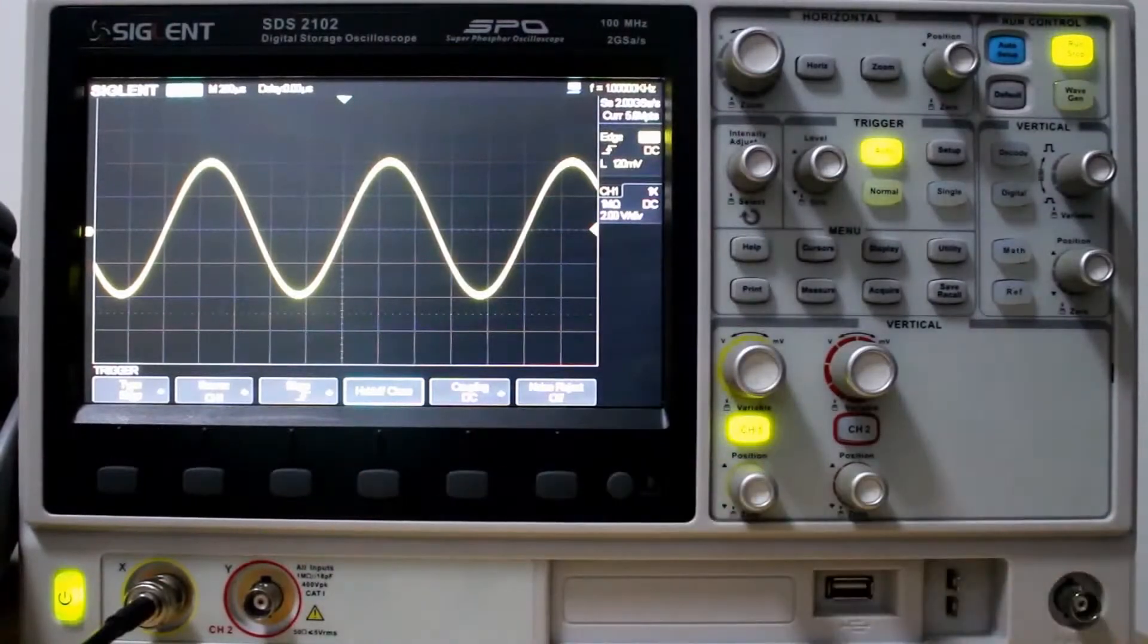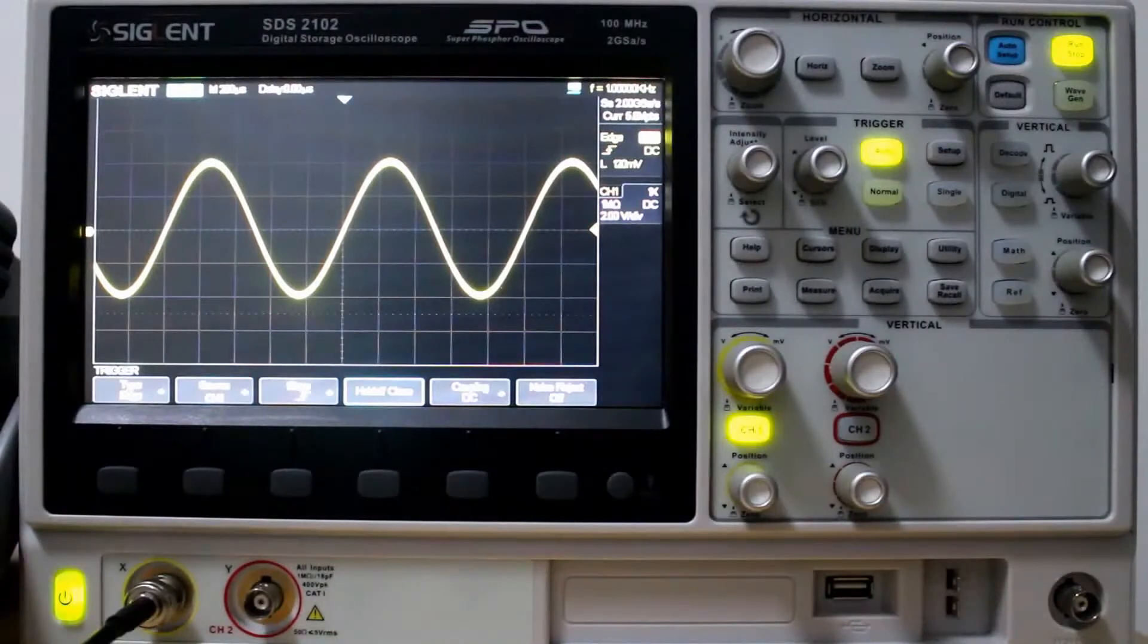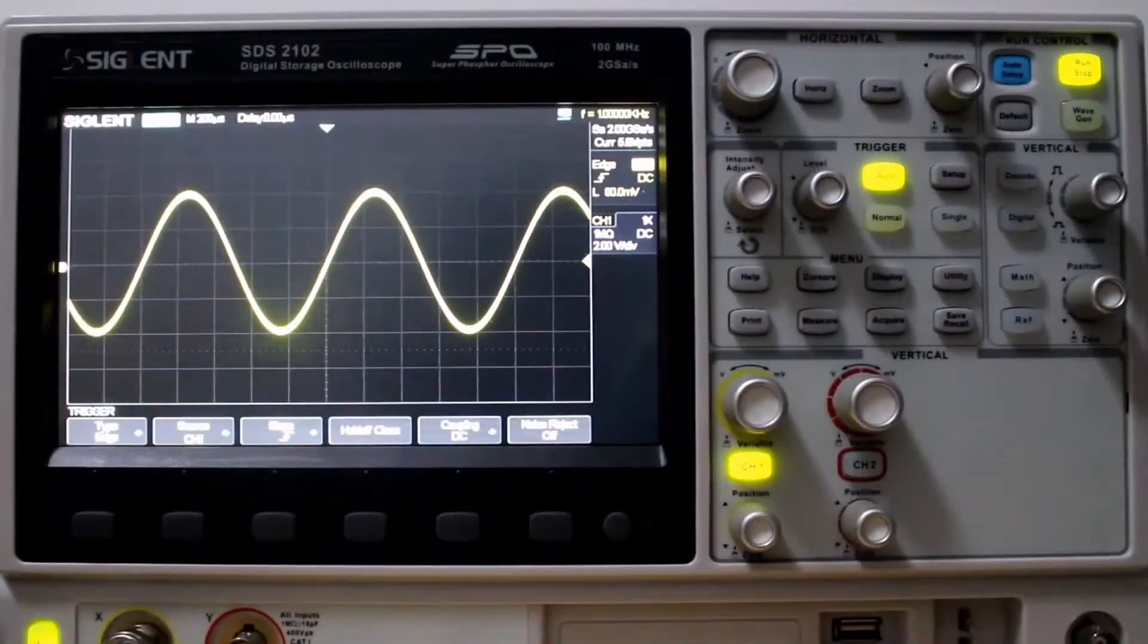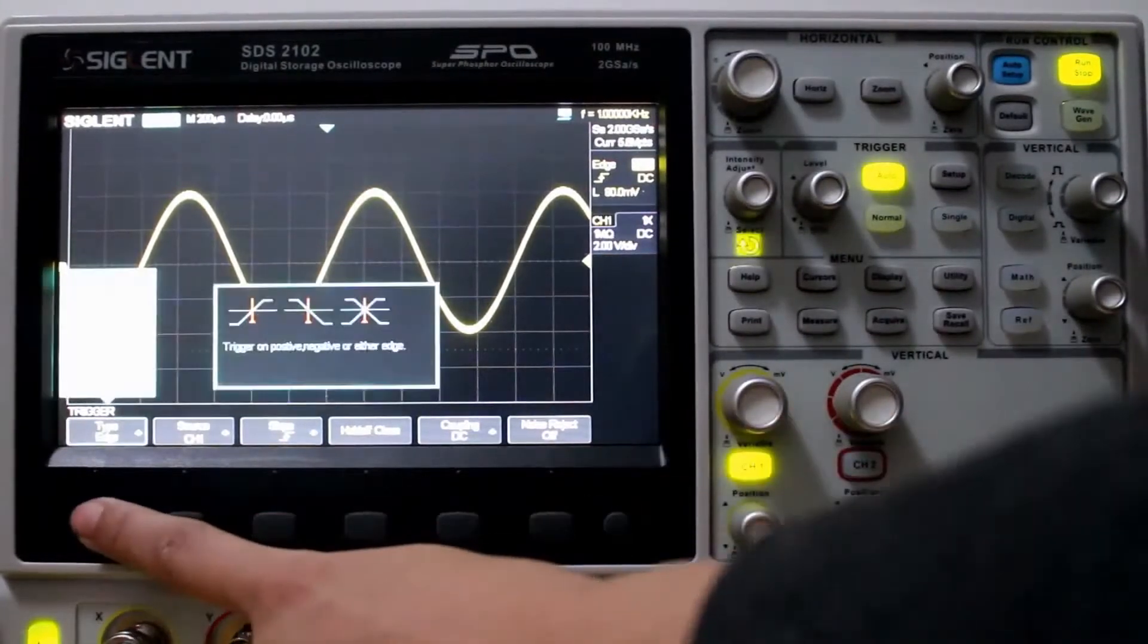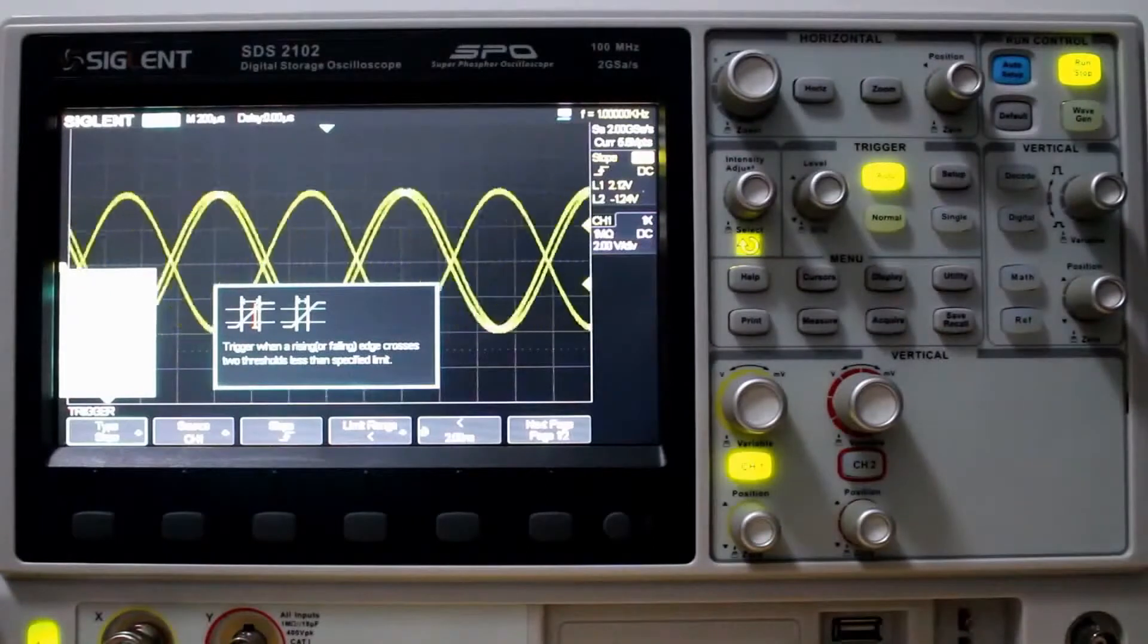Now we can close that. And there you have it. Those are our trigger types. That's Edge to begin. So we looked at the Edge trigger type with a sine wave. Let's change it to Slope and a Ramp wave.